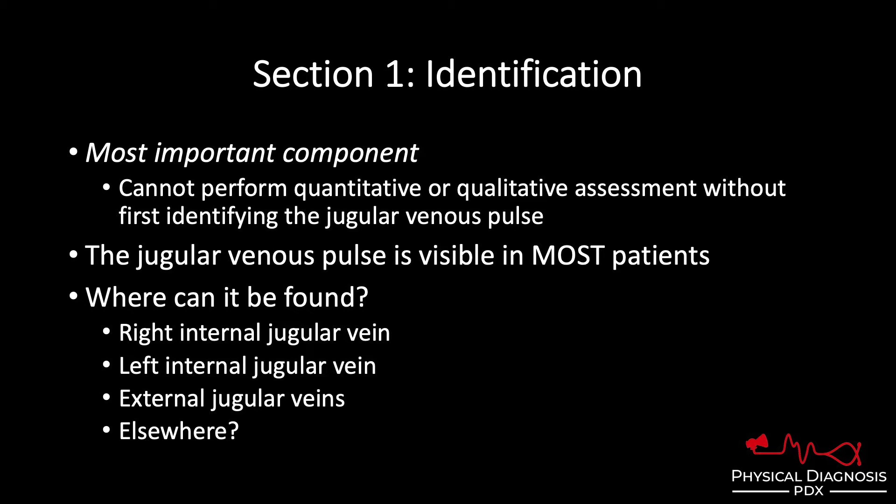Section one: identification of the jugular venous pulse. This is the single most important of the three components, simply because without it, components two and three cannot even be attempted.